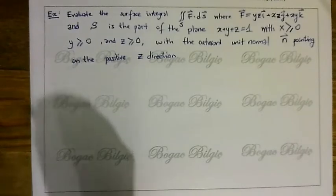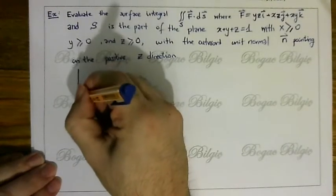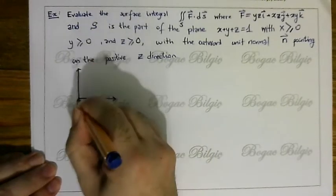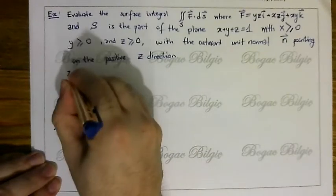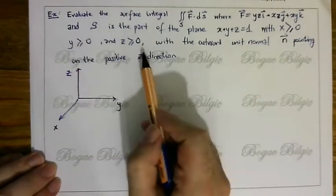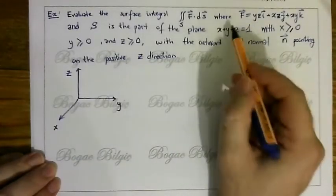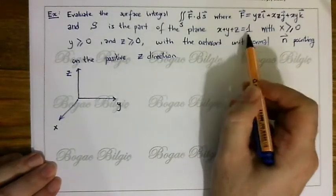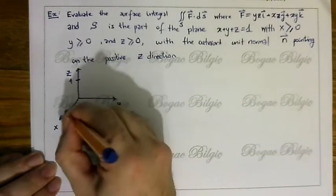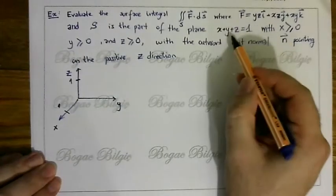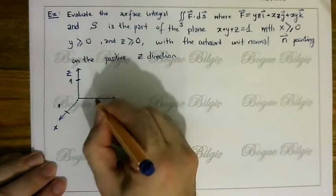Firstly, we can draw the plane. With all terms bigger than 0: when x and y are 0, z = 1; when y and z are 0, x = 1; and when x and z are 0, y = 1.